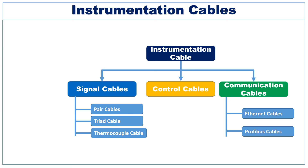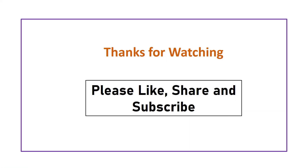To summarize, instrumentation cables can be categorized as signal cables, control cables, and communication cables. There are three types of signal cables: pair cables, triad cables, and thermocouple cables. Communication cables can be categorized as Ethernet cables and Profibus cables.